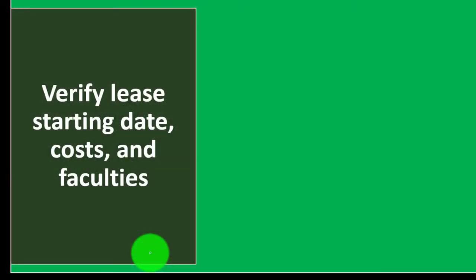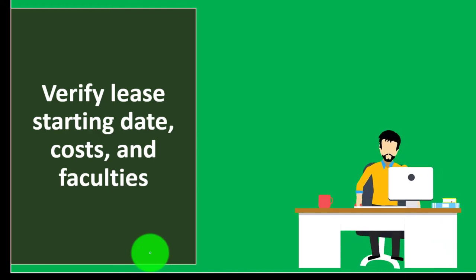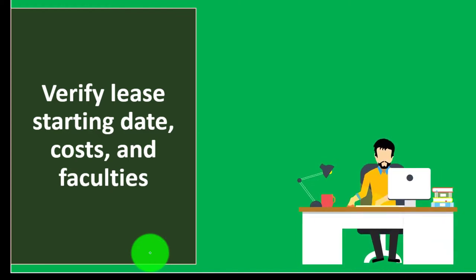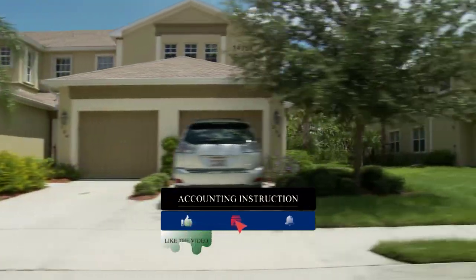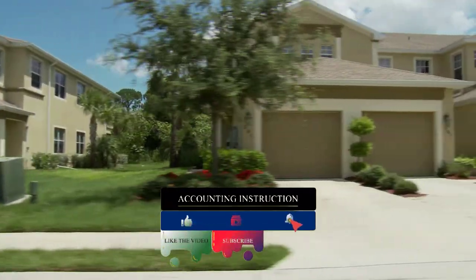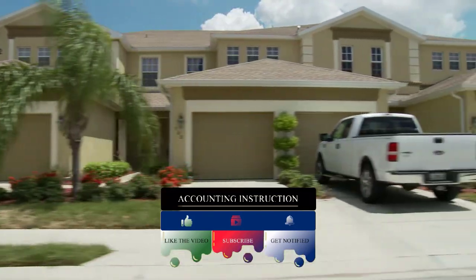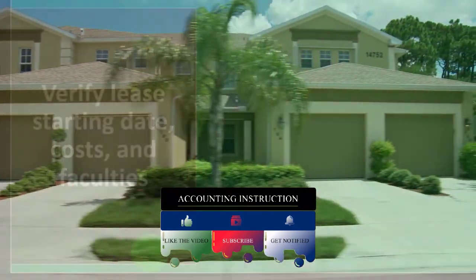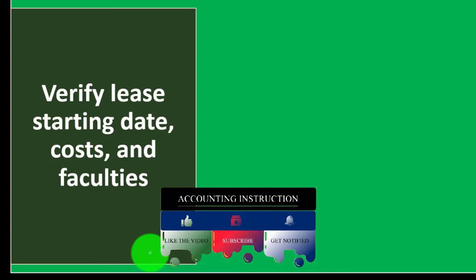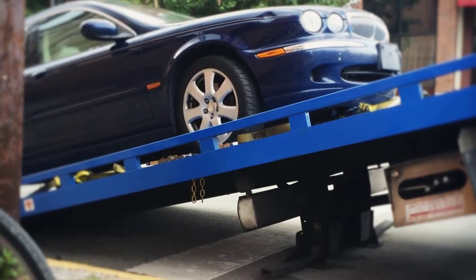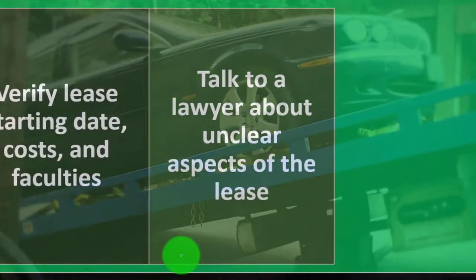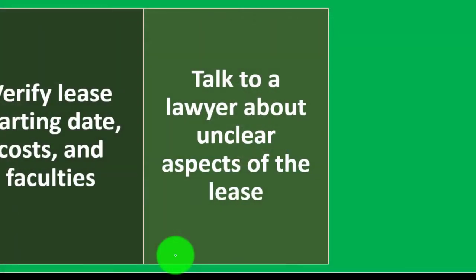Make sure you understand what facilities are available, like a pool, and what your access to them entails — including garages or covered parking. For example, one time after moving in I didn't know there was a difference between parking under a covered overhang and regular parking, and my car got towed. So make sure you know the rules on parking.